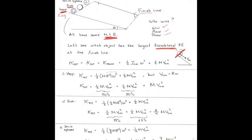For an object that rolls, rolling is a linear combination of pure rotation about the center of mass — that's the spinning part — and pure translation of the center of mass, moving left to right. So the total kinetic energy of something that rolls is the kinetic energy due to rotation about the center of mass plus the translational kinetic energy of the center of mass. When something rolls, there are two parts to kinetic energy.